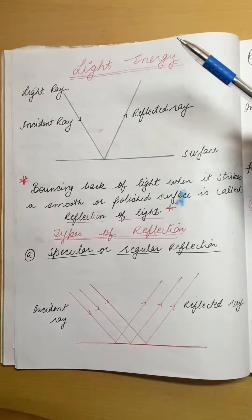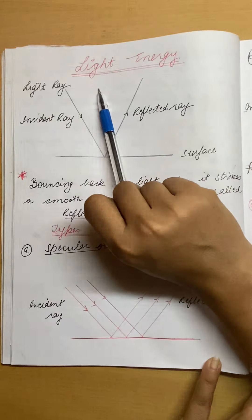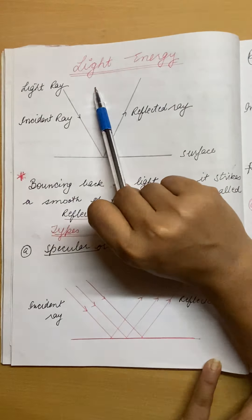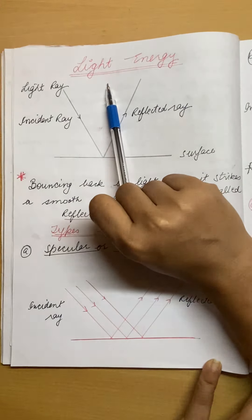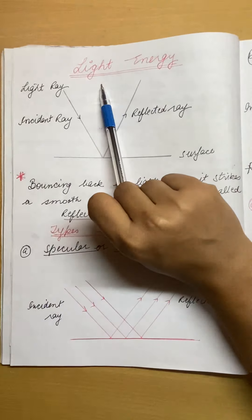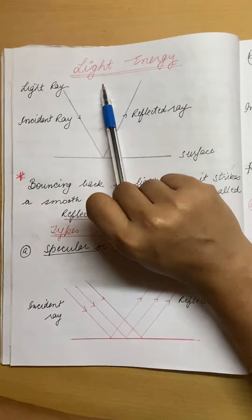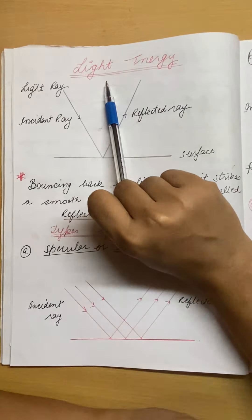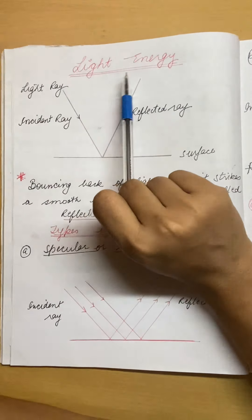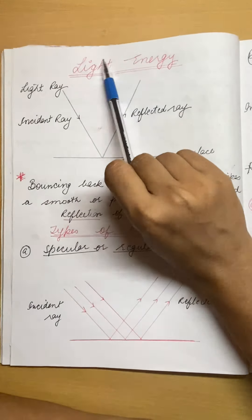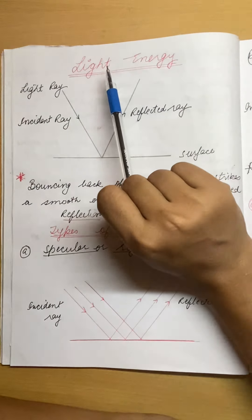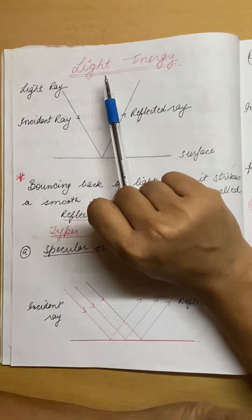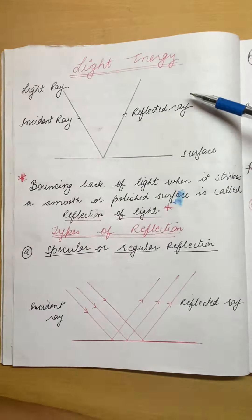Now what is light? Light is a form of energy and with the help of light we are able to see a number of things. That means light is a form of energy that makes things visible to us. Without light we are not able to see anything. Sun gives us light — solar energy, which is a form of light energy. So now we are starting the chapter.